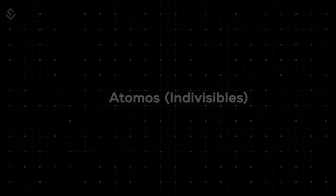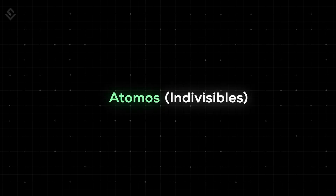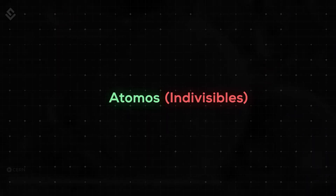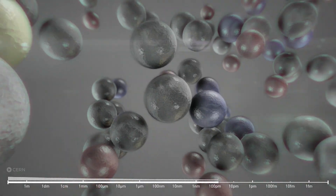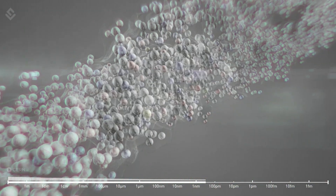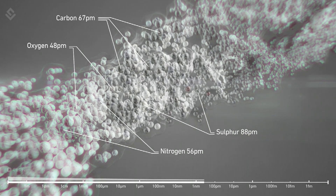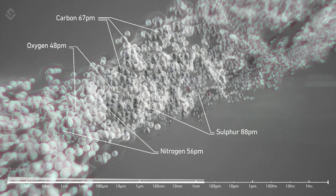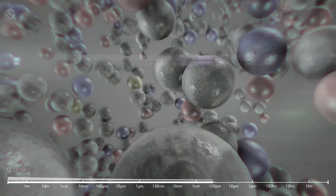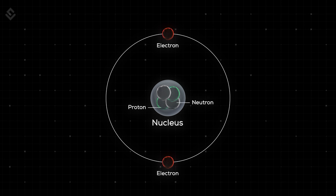Not completely. The first point — atoms exist — yes. Atoms are indivisible — no. Now we all know that atoms are tiny composite particles that arrange in various patterns to form molecules. And inside the atom, we have protons, electrons, and neutrons.